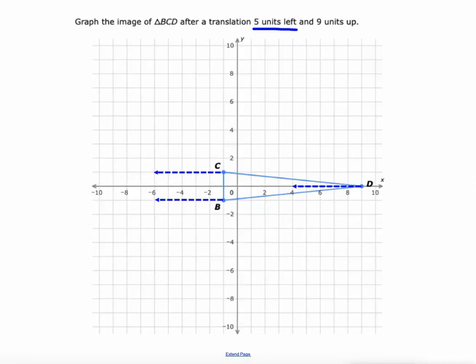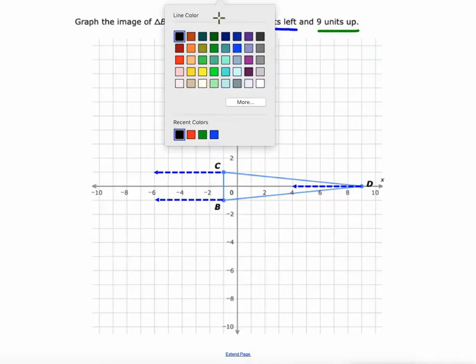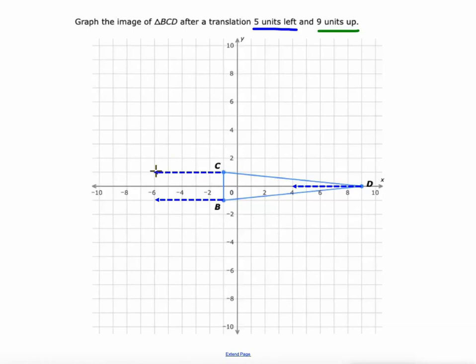And then we're going to go 9 units up. 9 units up. So I'm at 1, that's going to leave me at 10. I'm at negative 1. Negative 1 plus 9 is positive 8. And 0 plus 9 is 9. Plot those three points that are the vertices of our triangle.